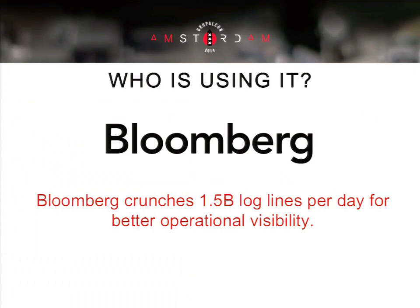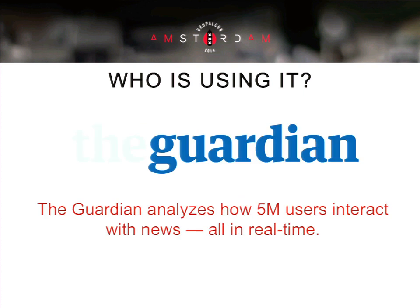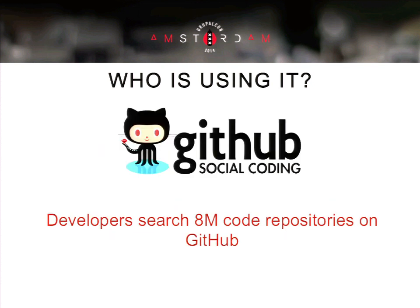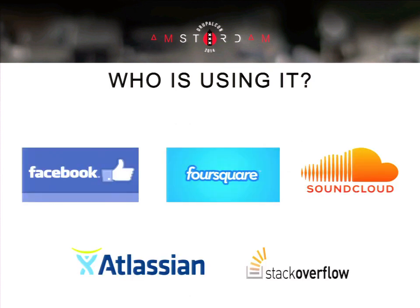Let's see who is using this system. Bloomberg is using Elasticsearch for log warehousing and crunches more than 1.5 billion log lines per day. The Guardian analyzes how users interact with the news — they have more than 5 million users. GitHub uses Elasticsearch for searching code across a lot of files. Companies like Atlassian, Foursquare, SoundCloud, Stack Overflow, and Wikipedia also use Elasticsearch. A lot of big companies are using it, and it seems like Elasticsearch fulfills their needs.